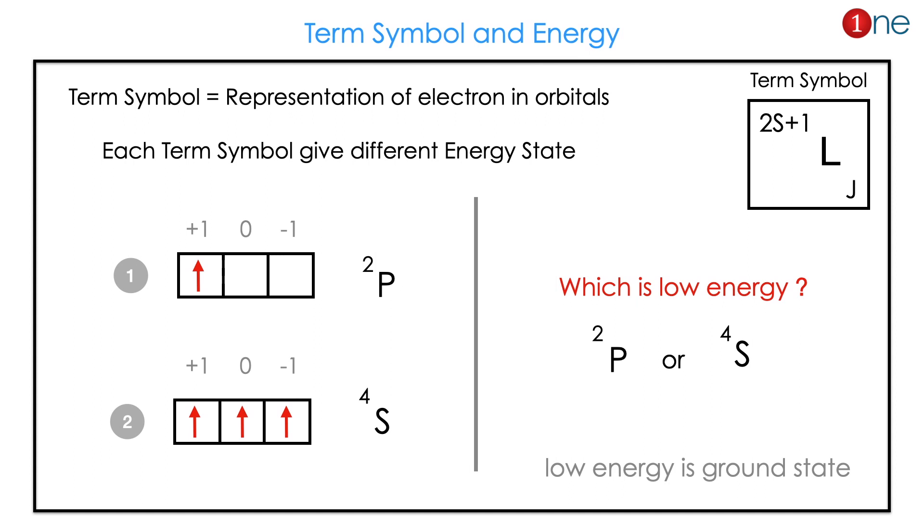First, let us see what is term symbol and energy. Term symbol means representation of electrons in orbital. Normally it will be written as L power 2S plus 1 and subscript J. Here I've given term symbol for two states which is one electron in p orbital and three electrons in p orbital.